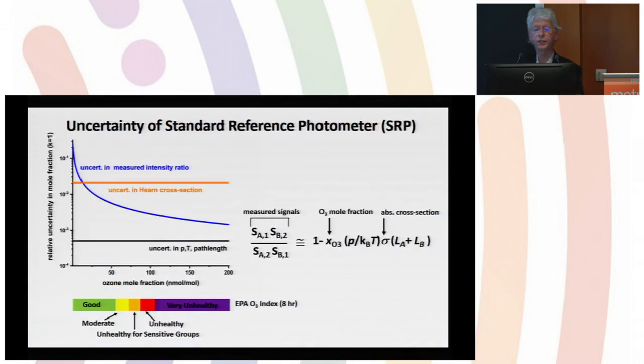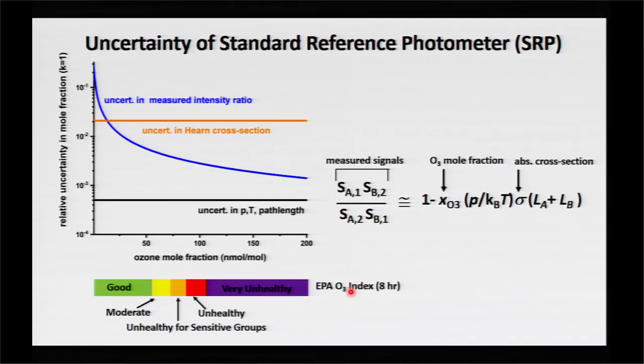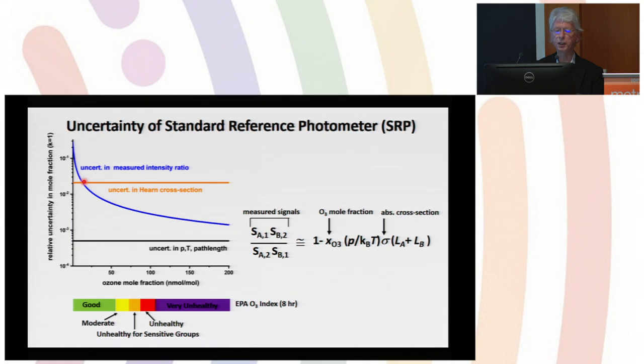The current SRP uncertainty budget looks like this. We have two dominant components: the type A component due to measurement of beam intensities, which is a function of ozone molar fraction. I'm showing also the relevant concentration scales for regulatory regulations and ozone human health issues. As soon as you get above about 13 parts per billion of ozone, the dominant uncertainty is the type B uncertainty associated with the Hearn cross section at about two percent.